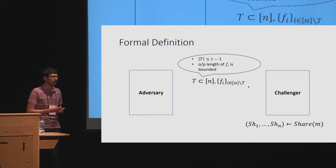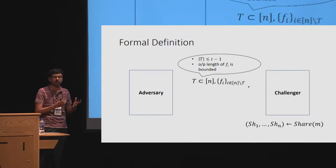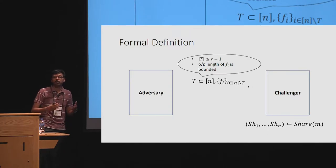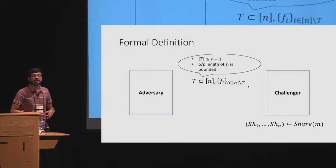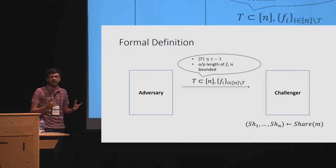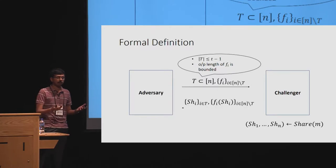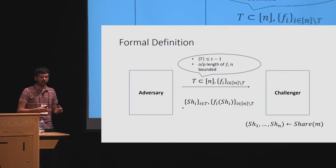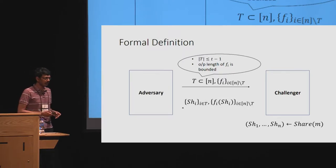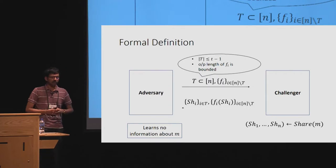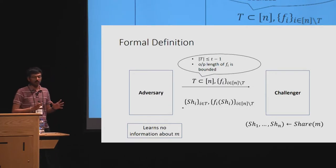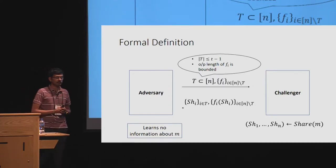If we allow the output length of these functions to be arbitrary, the functions could be as long as the share size, and if they are identity functions, the adversary gets all information about the secret. Hence we restrict the output length to be bounded. Importantly, we do not place any restrictions on the computational complexity of these leakage functions — they can be arbitrary as long as they have bounded output length. The challenger then sends back the shares of corrupted parties and the outputs of these leakage functions applied on the honest parties' shares.